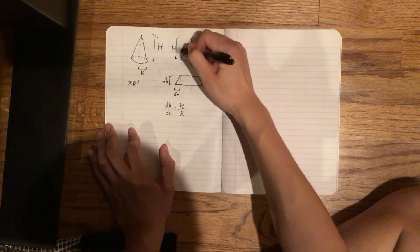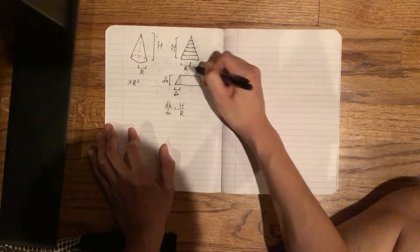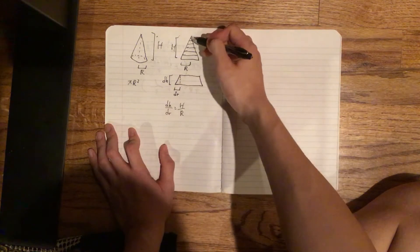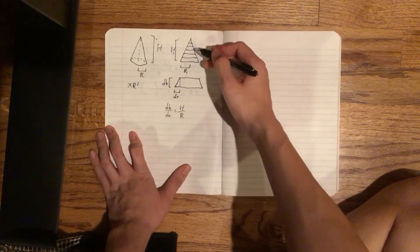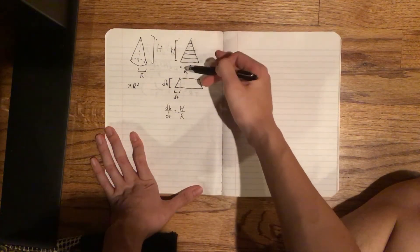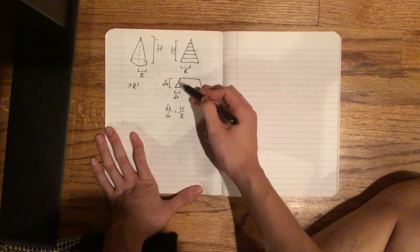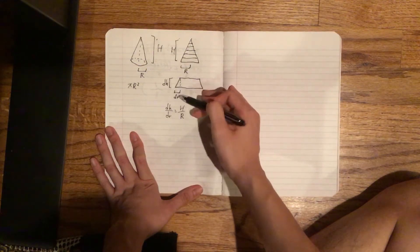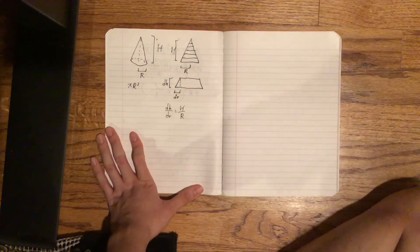And this relationship between dh over dr equals the actual height and the actual radius. Because this is the actual height and this is the actual radius. As you can see, the slope of this line here must be constant, and namely that slope is h over r. So dh/dr = h/r.